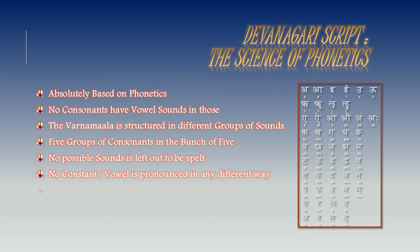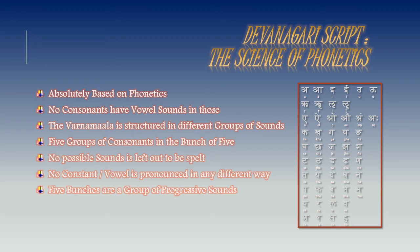Five groups of progressive sounds are each ending with the nasal connector, as already discussed. We often use the dot above the line as a nasal connector. But we must understand that these five groups — Ka, Cha, Ta, Ta, Pa — have their defined nasal alphabets. The dot is only to be used for the other letters; only those should have the dot connector for nasal.